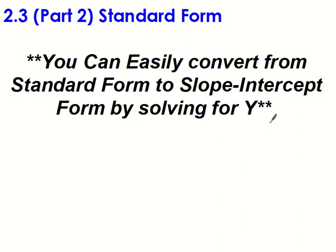All right, we are doing 2.3 part 2. We're still talking about standard form. That's AX plus BY equals C. And A and B can be 0, but they cannot be 0 at the same time.